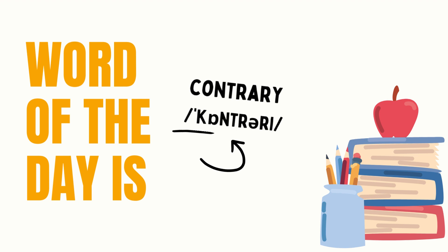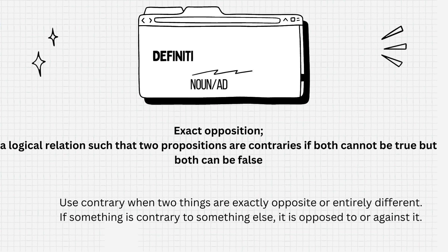Contrary is a noun and an adjective. Definition: exact opposition — a logical relation such that two propositions are contraries if both cannot be true but both can be false. Use 'contrary' when two things are exactly opposite or entirely different. If something is contrary to something else, it is opposed to or against it.